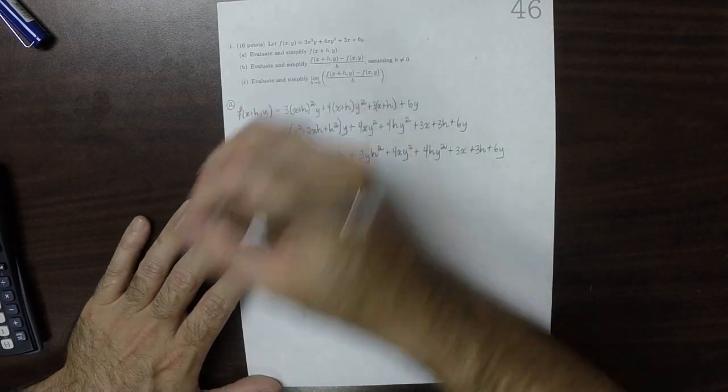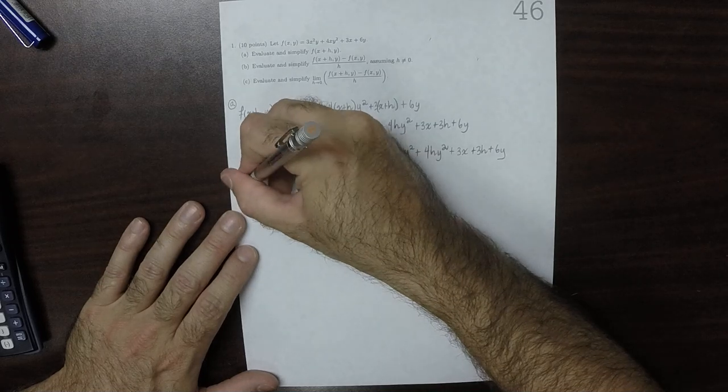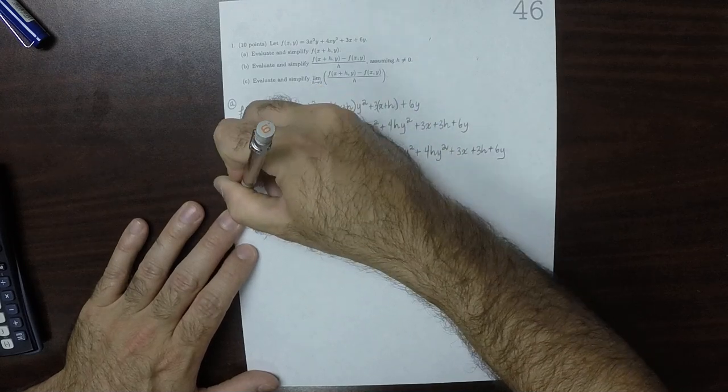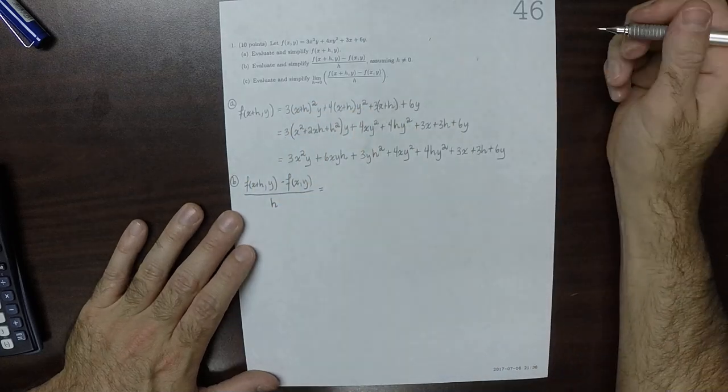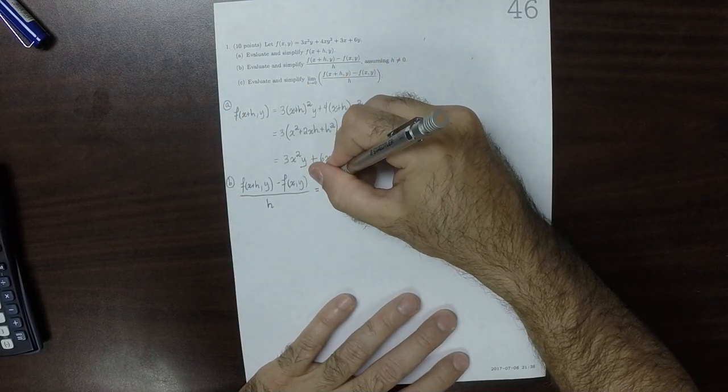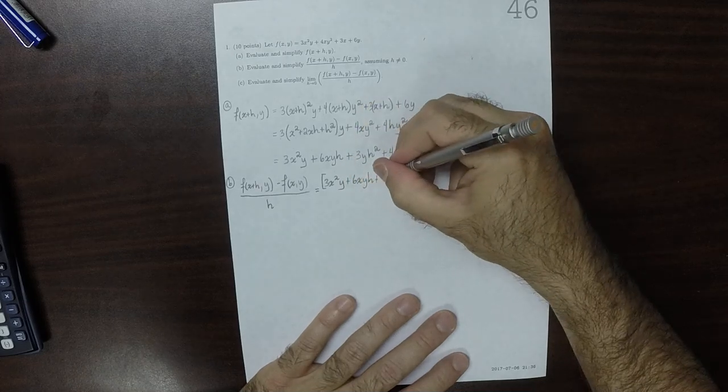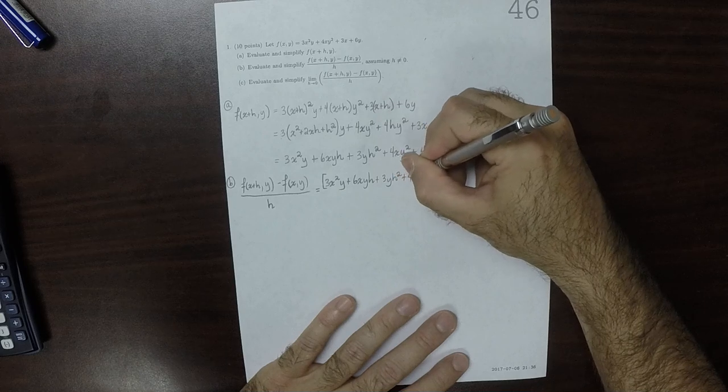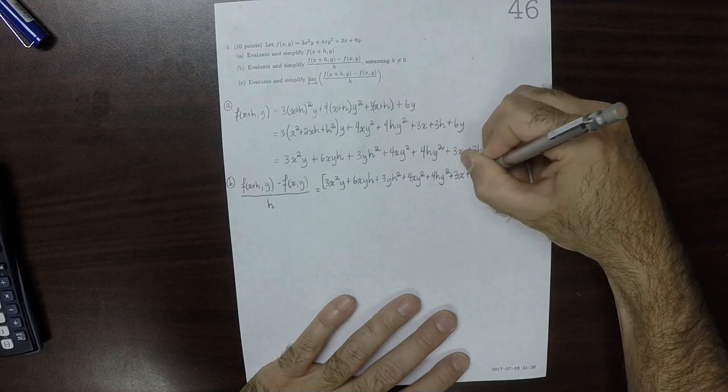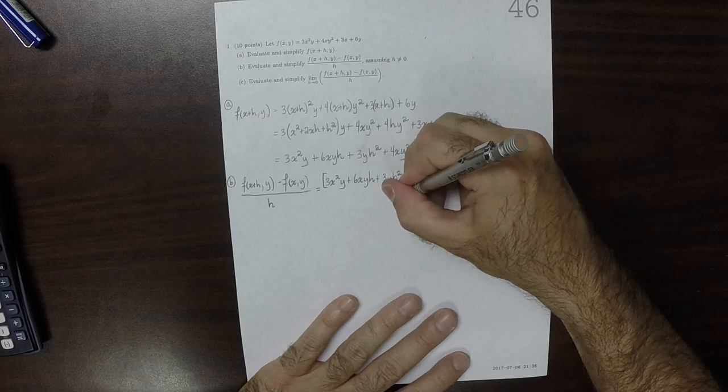Part b is now compute that. So f of x plus h comma y minus f of x comma y over h, assuming h is not 0. This is, well, copy all of that. So 3x squared y plus 6xyh plus 3yh squared plus 4xy squared plus 4hy squared plus 3x plus 3h plus 6y. All of that.